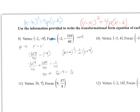We need to figure out what p is — that's the distance from the vertex to the focus. If you're given the vertex and the focus, you subtract the vertex from the focus using the values that change. So we have −359/40 minus −9, and working that out gives 1/40. So p = 1/40, and 4p = 4 × (1/40) = 1/10.